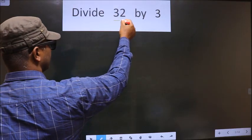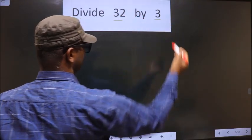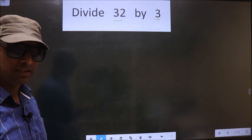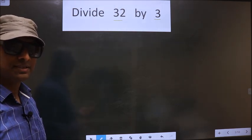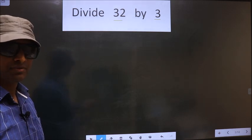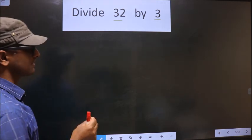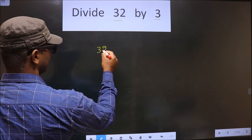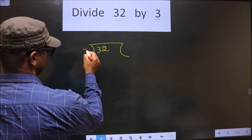Divide 32 by 3. While doing this division, many make a mistake. What is the mistake? See here. But before I start, first I should frame it in this way. That is 32 here, 3 here.